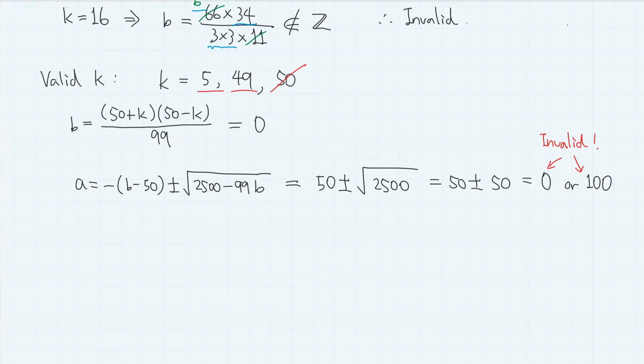For other cases, if k equals 5, then b equals 25. And a equals, now we have 25 plus minus square root of 2500 minus 99 times 25, which simply gives 25. So 25 plus minus 5, which is 20 or 30.